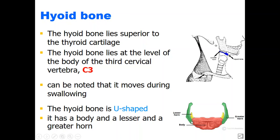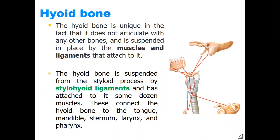The hyoid bone has a body, with the lesser horn being higher and more anterior in position than the greater horn, which is more posterior. The hyoid bone has a unique feature in that it is not articulated with any other bones — there is no joint with this bone. It is held in position by membranes, ligaments, and muscles that attach the bone in the neck and move it during swallowing.